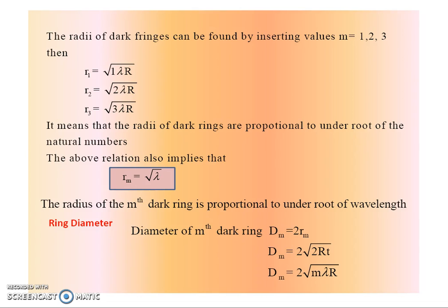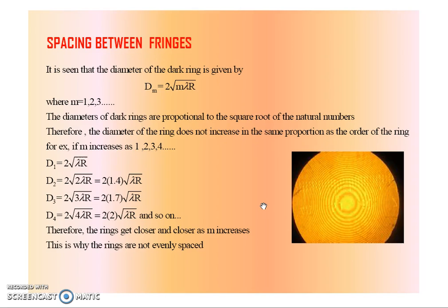Calculating the diameter of the dark ring: dm = 2rm, so dm = 2√(2Rt). Substituting 2t = mλ, we get dm = √(4mλR). For m = 1, 2, 3... we get d1 = 2√(λR), and the second ring gives 2×√2 × √(λR). As the order increases, the spacing between the fringes decreases — the rings get closer and closer as the order increases. That is why the rings are not evenly spaced.